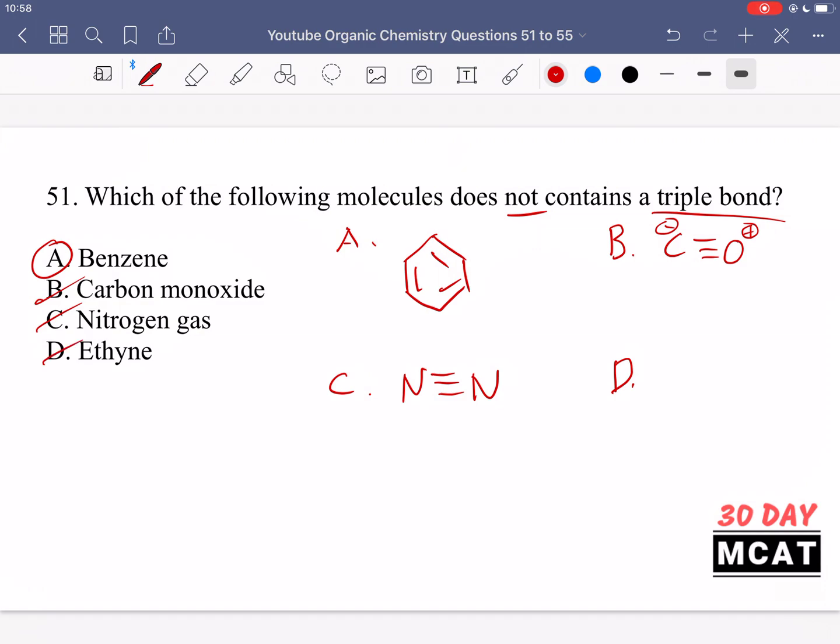Finally, option D, ethyne, is just two carbons connected. Both of them have one hydrogen and then a triple bond between the two carbons. So options B, C, and D have a triple bond, but A does not.